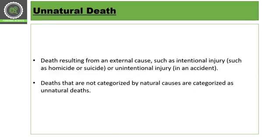What are the unnatural types of death? Death which results from some external cause — like some injury, homicide, suicide, or an accident, which is an unintentional injury. So there is intentional injury or unintentional injury. In unintentional injury there is an accident, and in intentional injury there is homicide and suicide — you can include murders as well. Deaths not categorized by natural causes are categorized under unnatural causes.